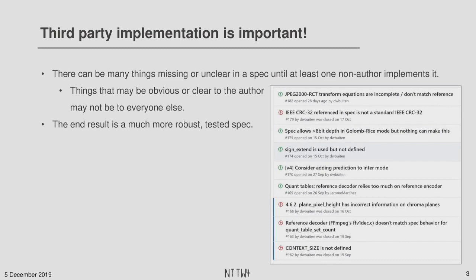And these bugs ranged from anything like context size was just kind of entirely missing from the spec, which is just a constant value, or that there were some edge cases in the spec that the spec technically allowed, but that the reference encoders simply didn't allow.